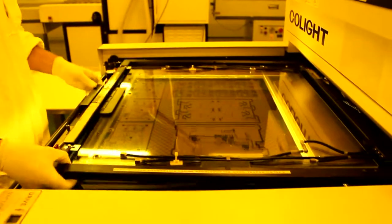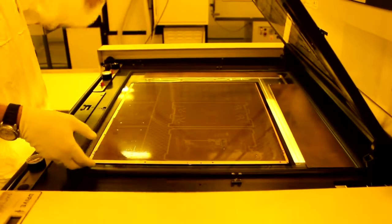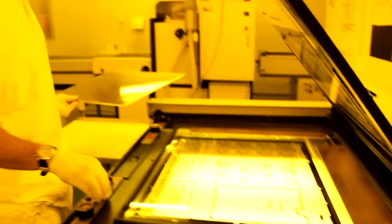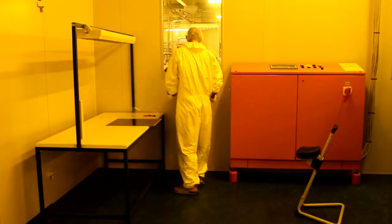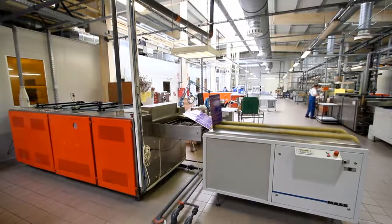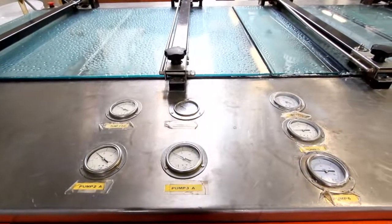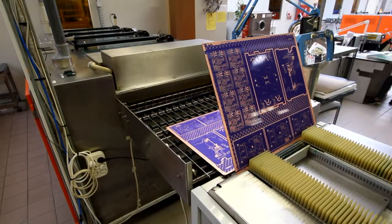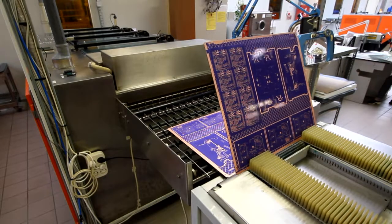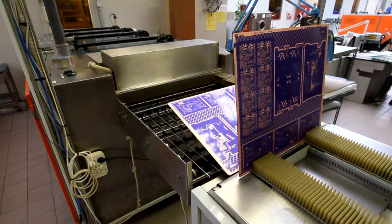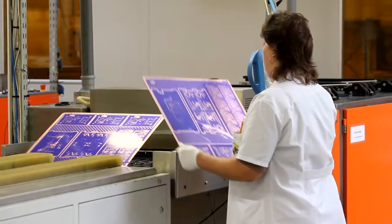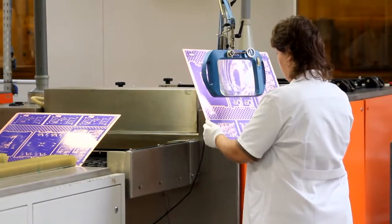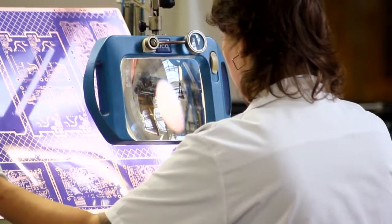For inner layers, the copper pattern we want was covered by the resist. For outer layers, it is exposed ready to be plated. The operator now checks the panels to make sure that the copper surface is clean and all the unwanted resist has been removed.